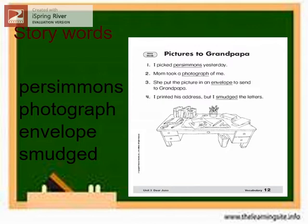Listen as I read the sentences. Number one: I picked persimmons yesterday. Number two: Mom took a photograph of me. Number three: She put the picture in an envelope to send to grandpapa. Number four: I printed his address but I smudged the letters.